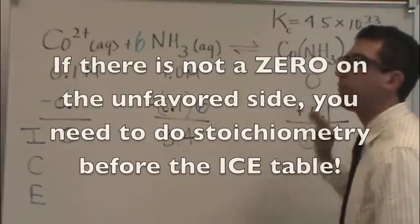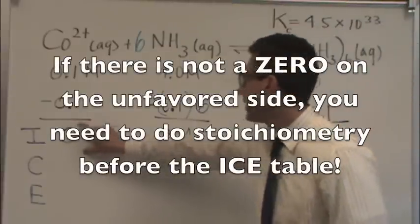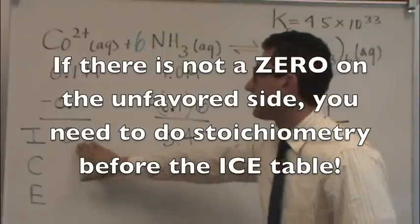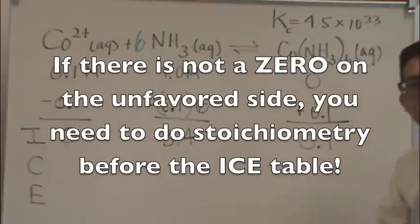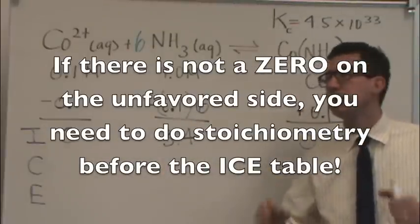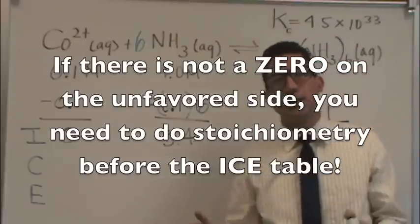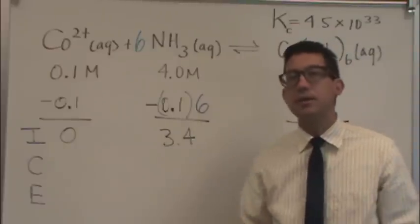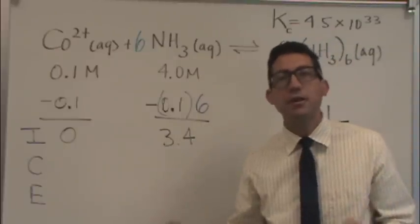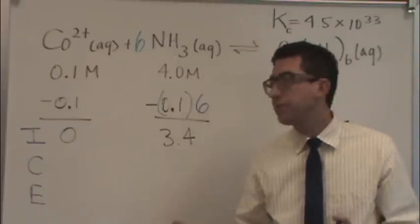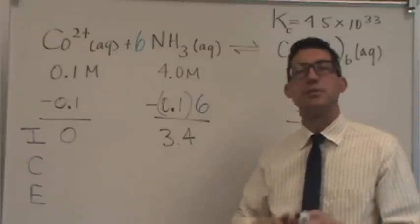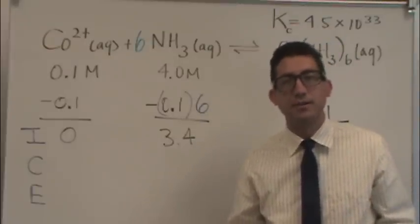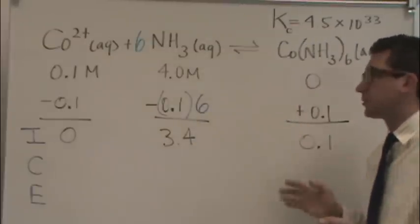So, one more time, you need a 0 on the unfavored side. You'll notice now, we do have the 0 on the unfavored side, and now we can begin the ICE table. In previous chapters, you never did this before because we set up the problem so that either there were no 0s, or there was no unfavored side, or there was always a 0 on the unfavored side. So in that case, you are totally fine.